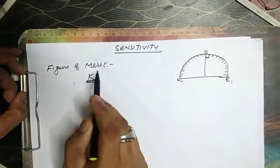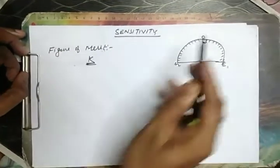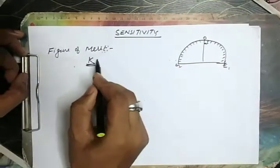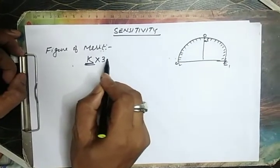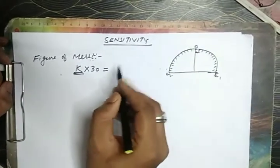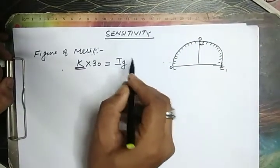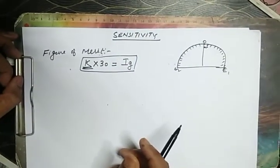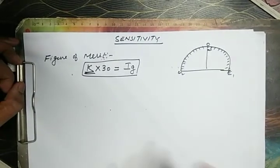If figure of merit of galvanometer is K and number of division is 30, it means that total current that can be passed through the galvanometer is IG. This is the maximum current that can be passed through the galvanometer.